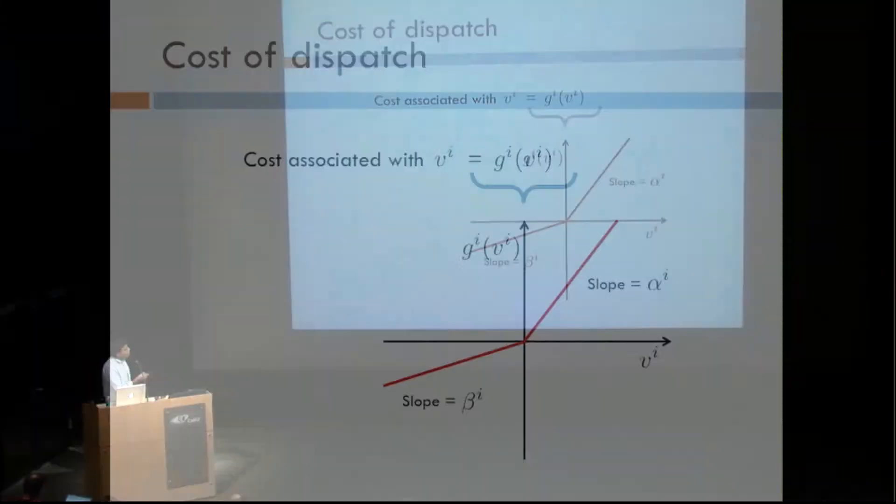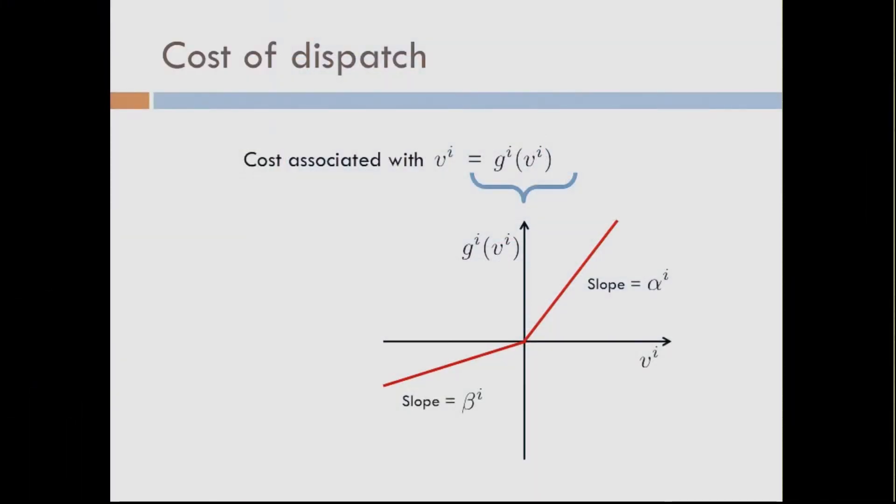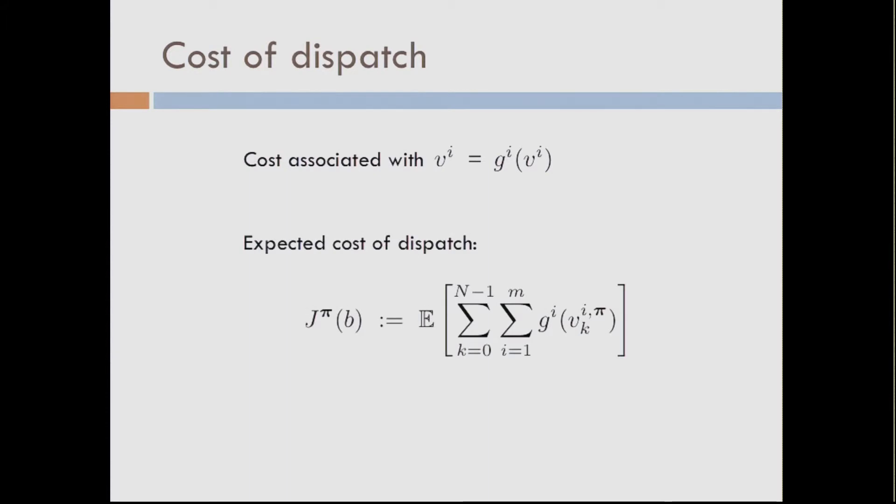Essentially, what have we done so far? We have said how the vi's would cost. So now we can formulate the expected cost of dispatch. You have your dispatch variables at every time k. Just add the costs up across all nodes, and then take a summation across time. And then take an expectation over all possible realizations of your net demand process c. That's your expected cost of dispatch. And in any sort of a control framework, what we're interested in is minimizing this dispatch cost. So this is a very classical multi-period economic dispatch problem.